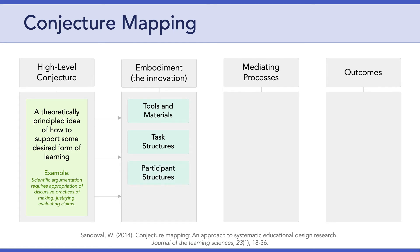The third element explains how participants — for example students and teachers — are expected to participate in those tasks. What are the roles and responsibilities they will be asked to take on via your solution? The fourth element of embodiment is discursive practices — in other words, ways of talking. How are the participants going to discuss, reflect, and interact about the tasks and the materials you're asking them to work with? These four elements all interact with each other and are designed deliberately to work together to achieve your envisioned design.